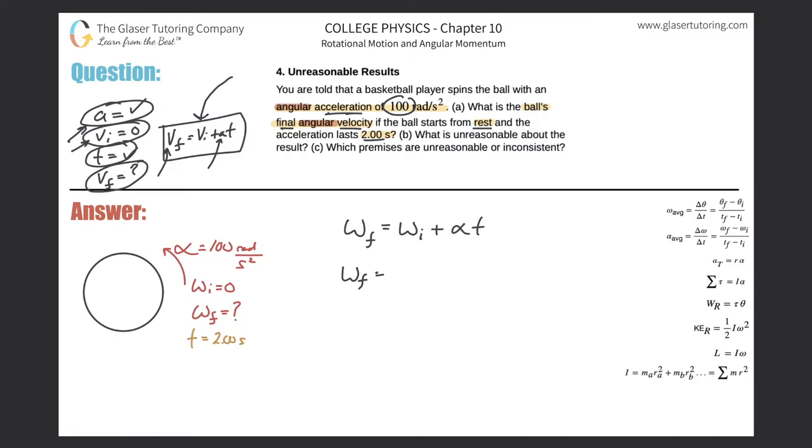So we know we have an initial value of zero. The angular acceleration, as they told us, was 100 radians per second, radians per second squared, that is, multiplied by the time of two seconds. So here we have a final angular velocity of 200, and that is in radians per second. So that's the answer. It was easy peasy, right? That was letter A.